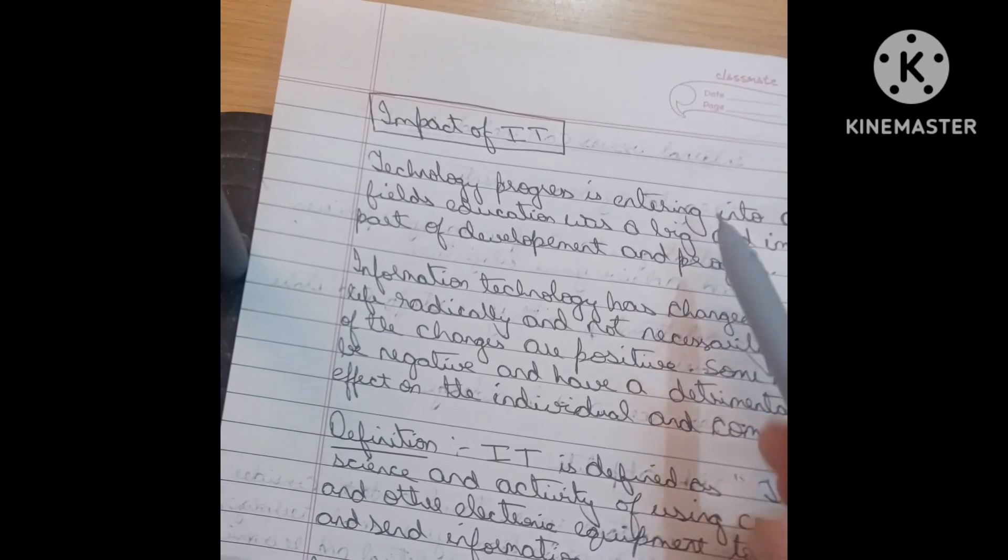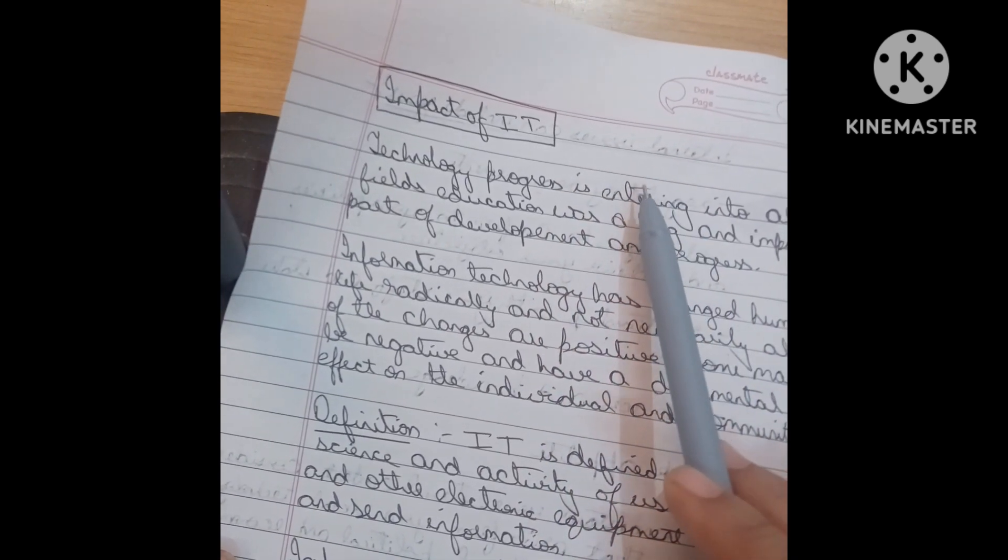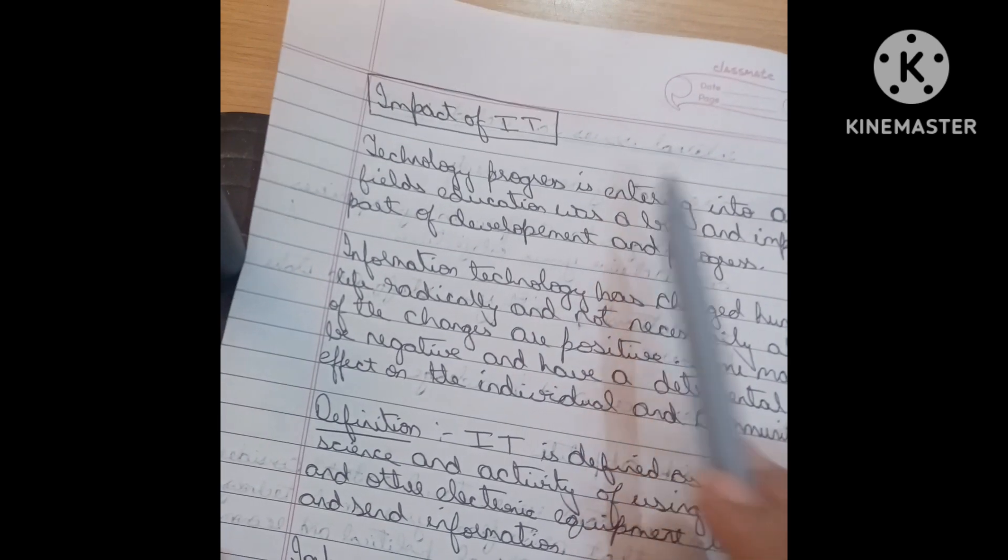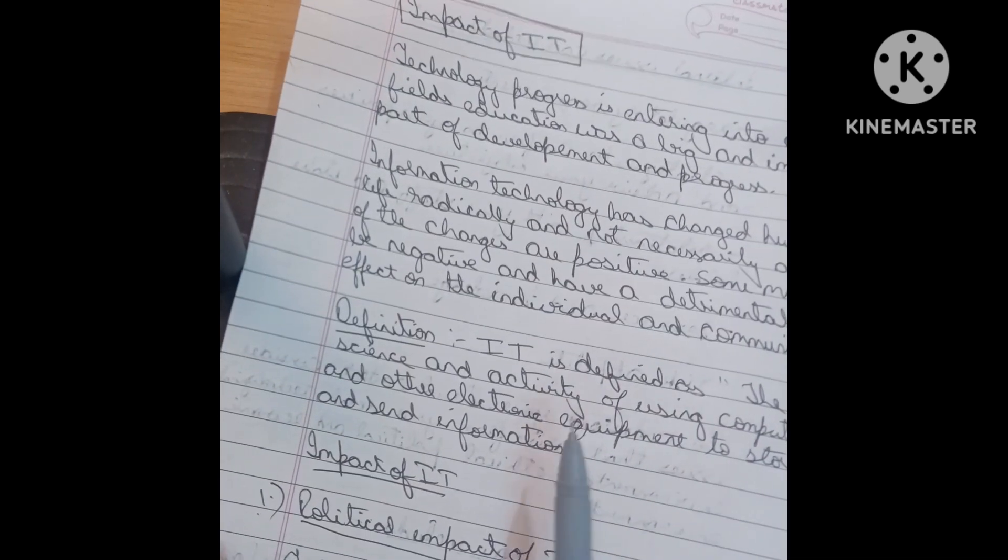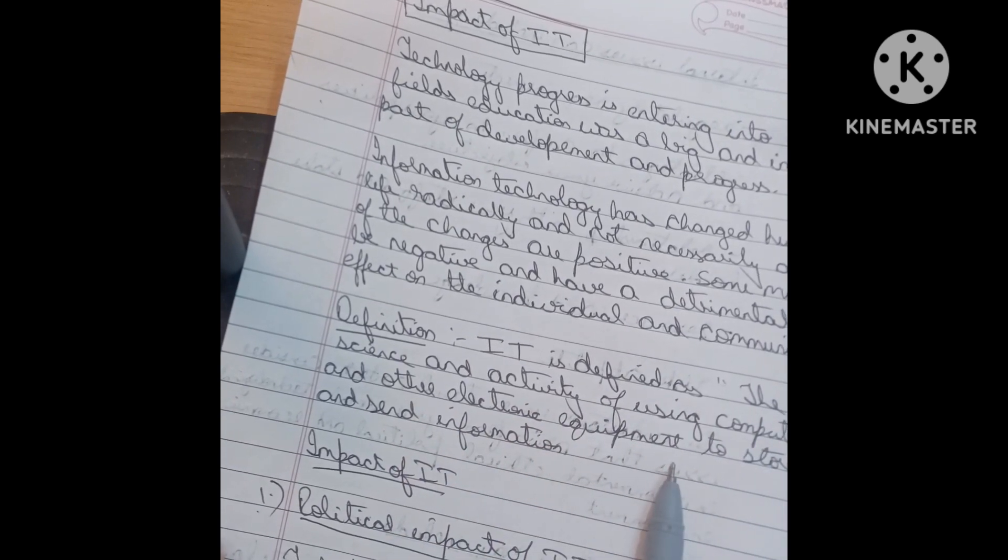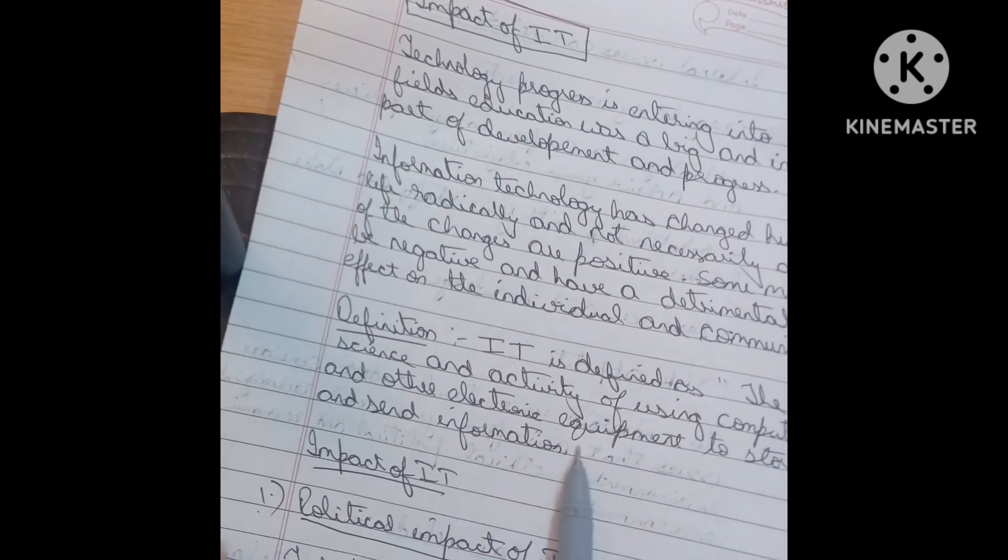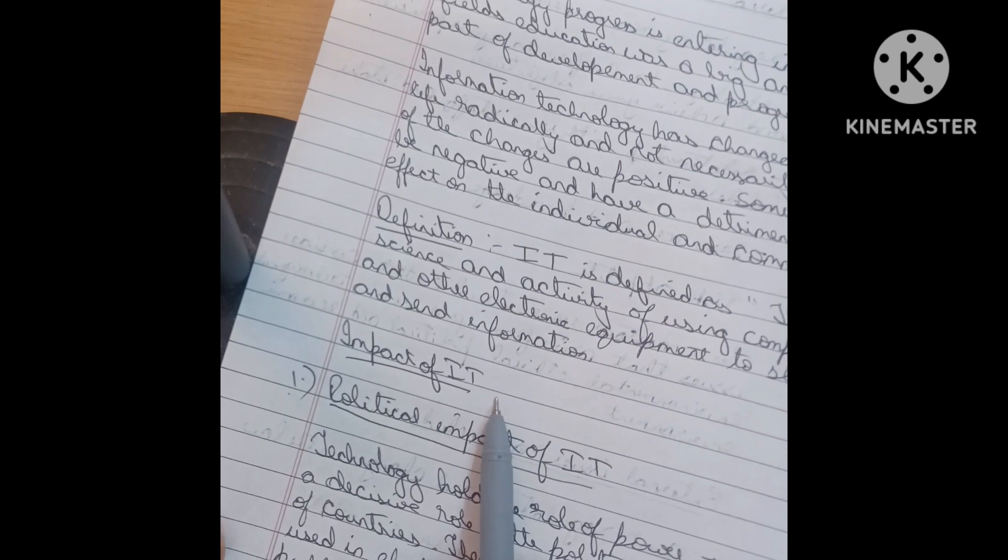Next one is impact of IT. Now, in all the places IT is must and should. Impact of IT is there. What is the definition of IT? IT is defined as the science and activity of using computers and other electronic equipment, storage and information. Because you are all CSE students, we know very much about what is IT and impact of IT.